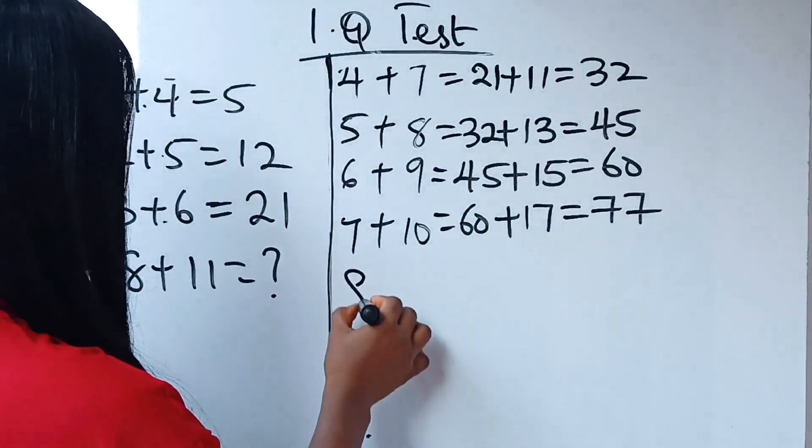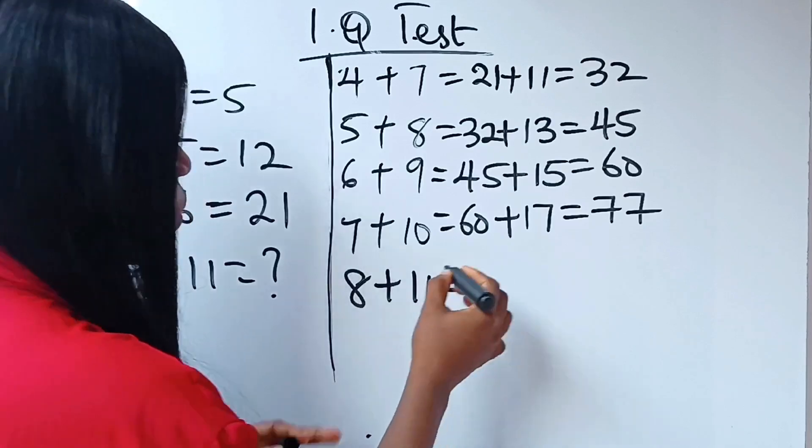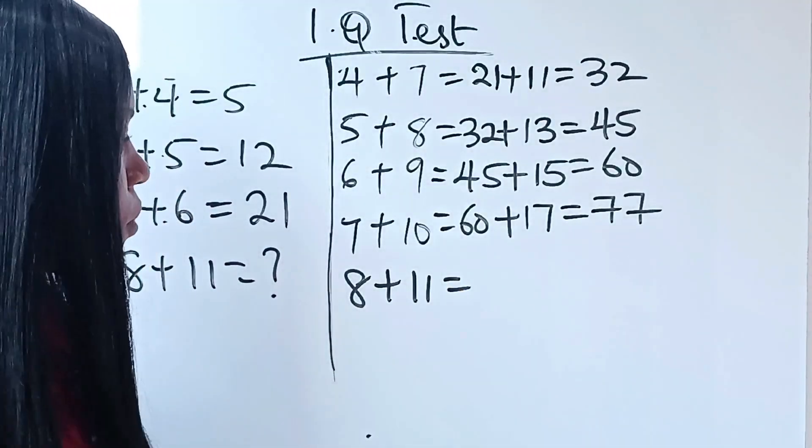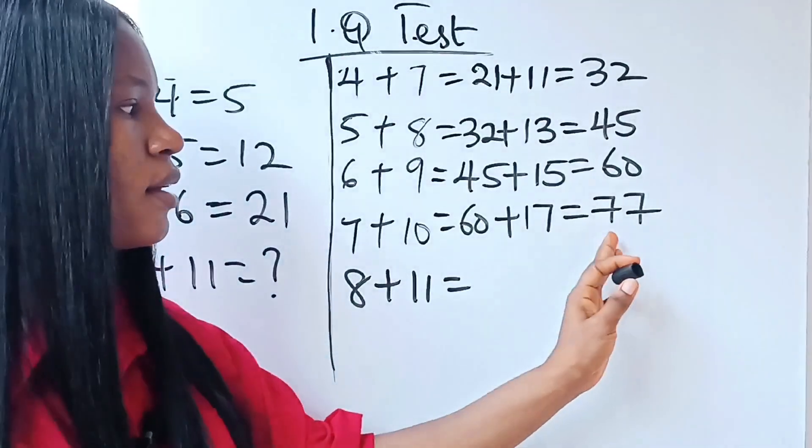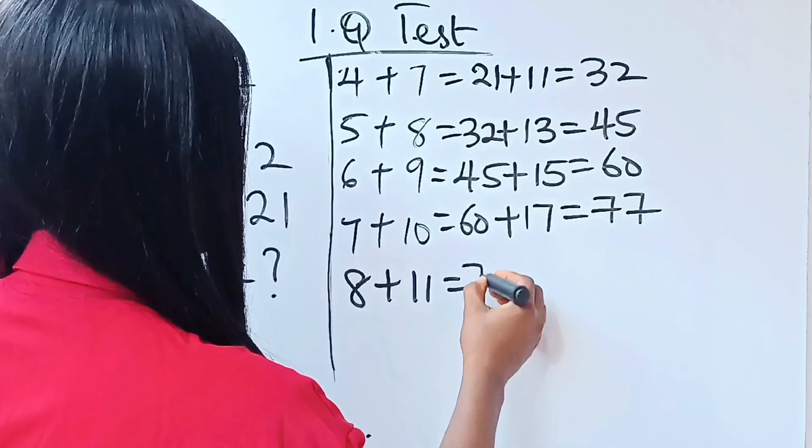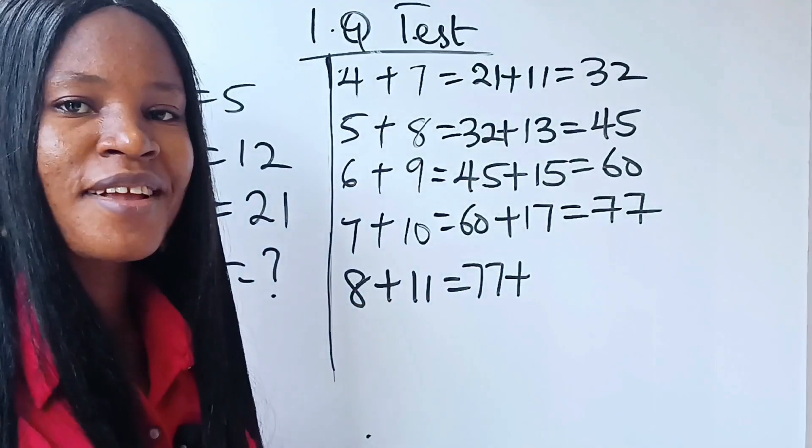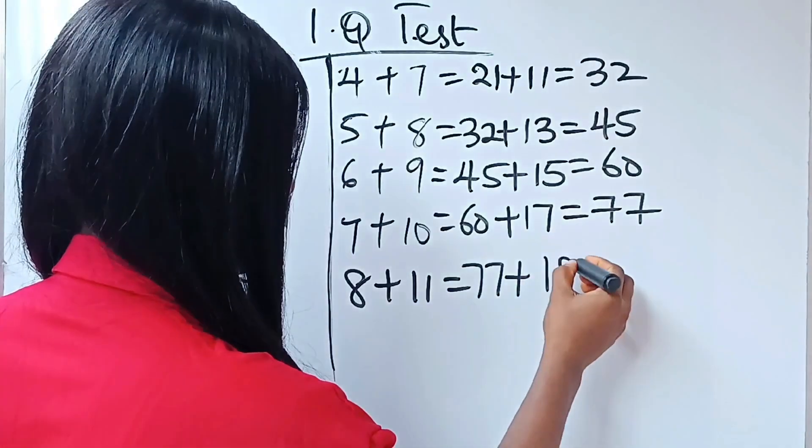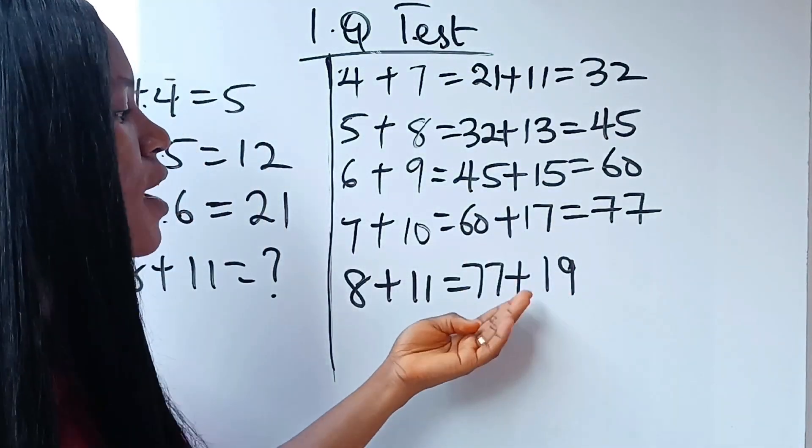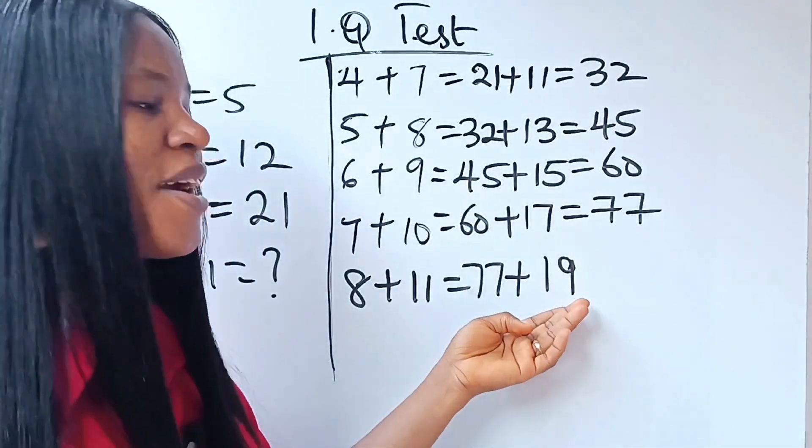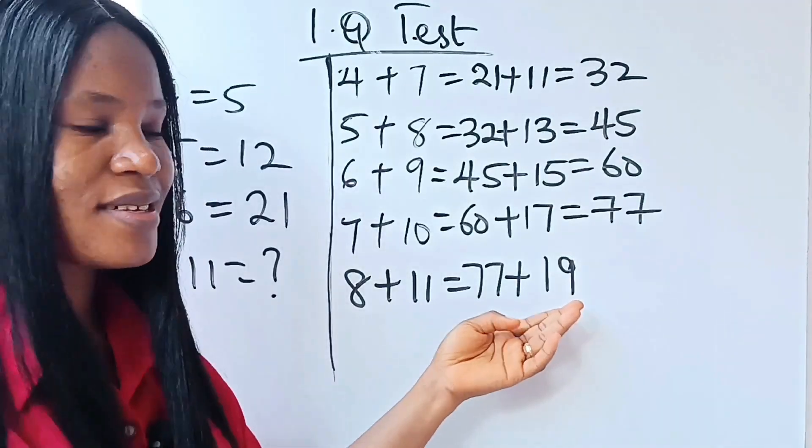Before we get to 8 plus 11, which is the one we are looking for, it should be 77 plus 8 plus 11 will give us 19. And 77 plus 19 will give us 96.